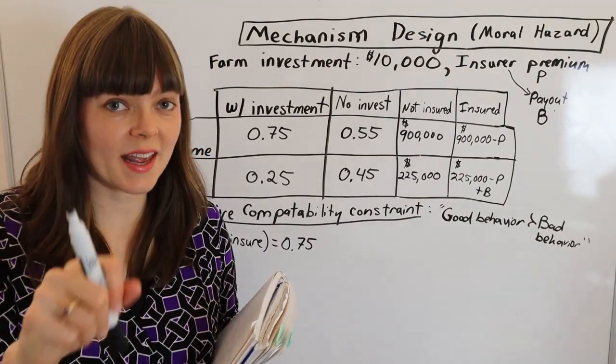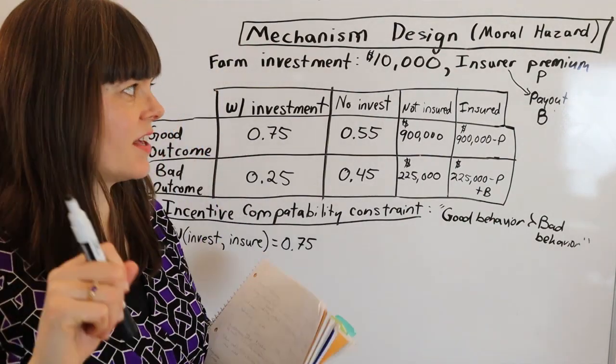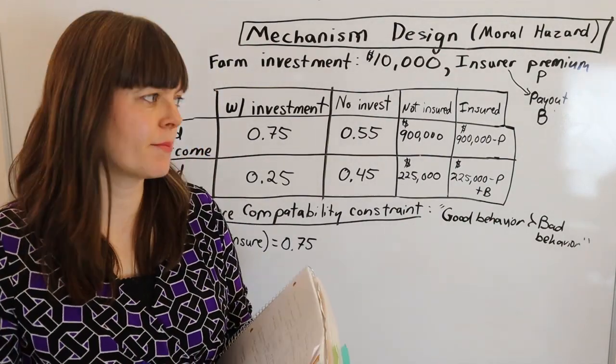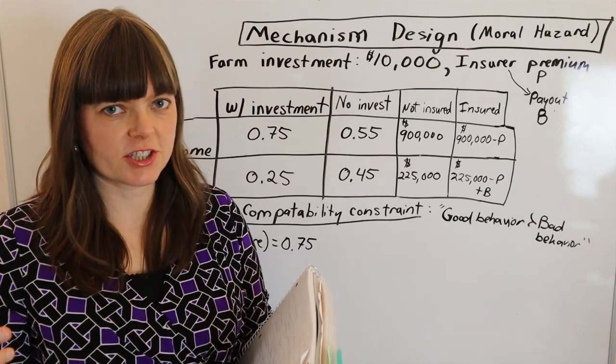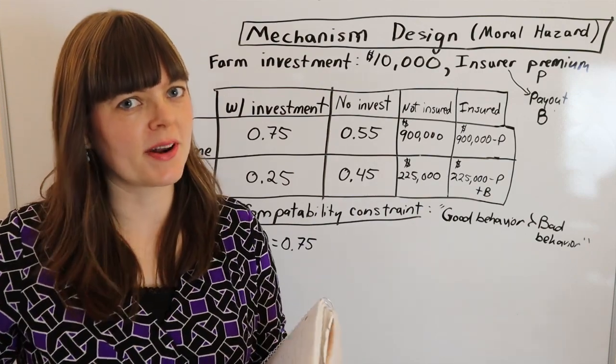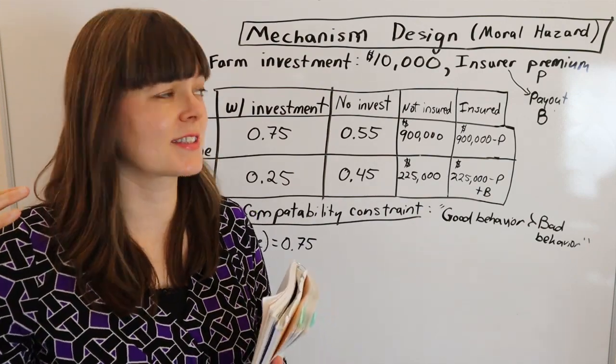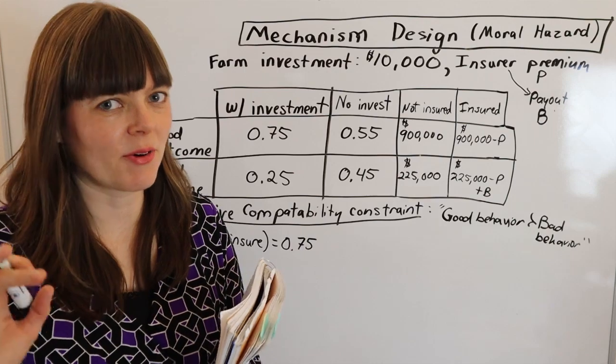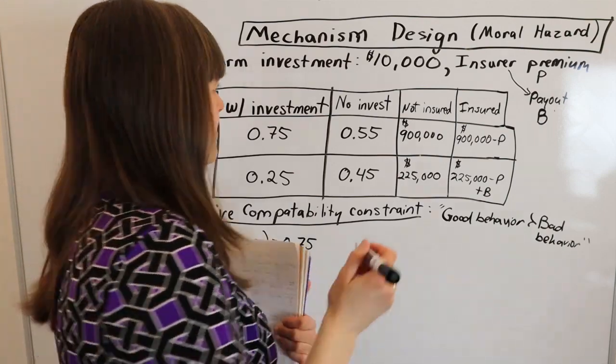One thing to mention is that we're going to have a very simple utility function over money — utility over money is just equal to the square root of money.